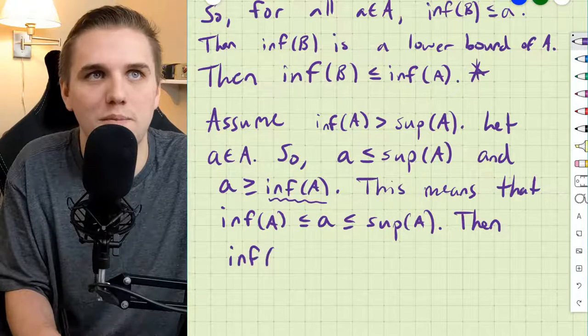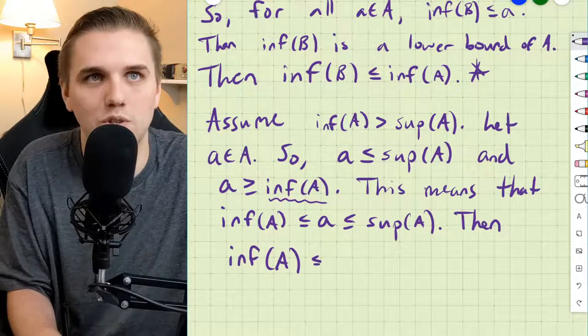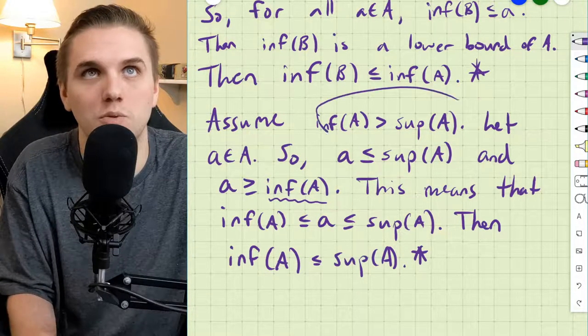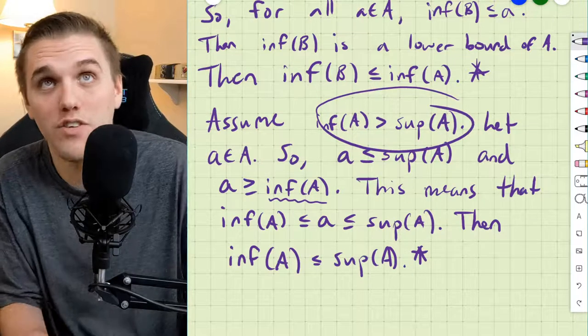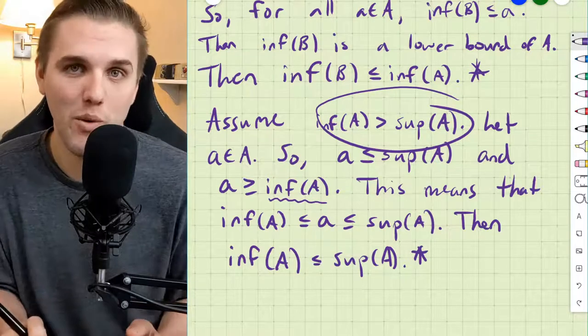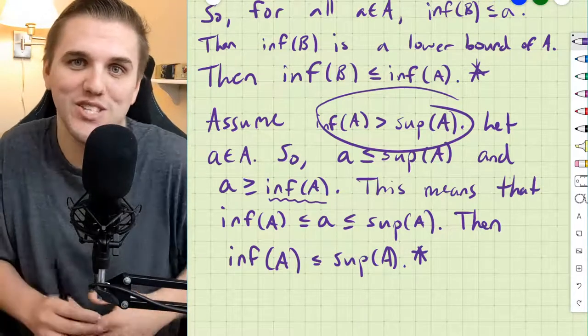So, that means the infimum of A is less than or equal to the supremum of A, which is our contradiction, because we assumed that the infimum of A is greater than the supremum of A. And so, that proves every inequality that we were trying to show. Thanks, everyone, and I'll see you all in the next video.